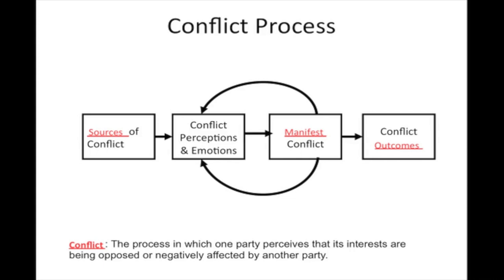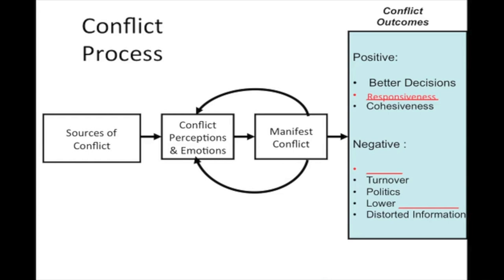We will look at details within each box of the model, starting with conflict outcomes. Sometimes we actually foster conflict in the modern workplace, but hopefully that conflict is of a very certain kind. At the top, we have positive outcomes — sometimes known as constructive outcomes, cognitive outcomes, or functional conflict. So conflict can be positive, constructive, cognitive, and functional. Those terms are interchangeable, and various sources of literature refer to positive conflict outcomes by those names.